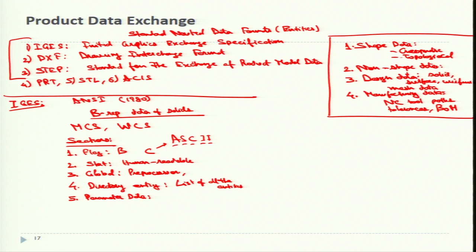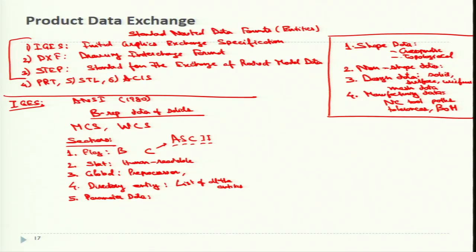Next is the parameter data. Parameter data means the actual data which defines each entity listed in the previous section, that is in the directory entry section. For example, in the directory entry, suppose if you have given a straight line, the straight line has two endpoints: x1, y1, z1, x2, y2, z2. Six points are there. These six points are the directory entry. Parameter data will tell each value - x1, x2, x3 as an individual. Each parameter will talk about an individual value. It will have information regarding this.